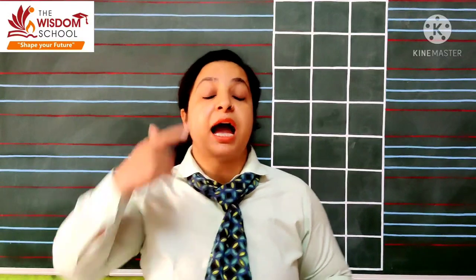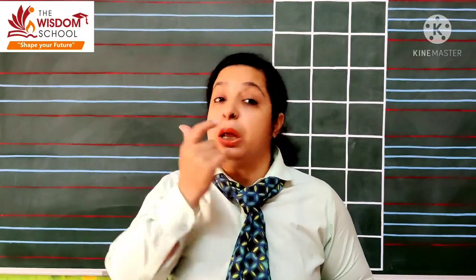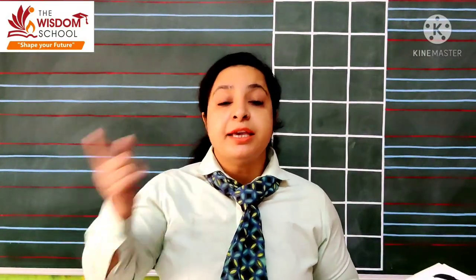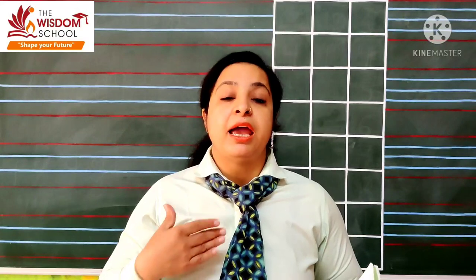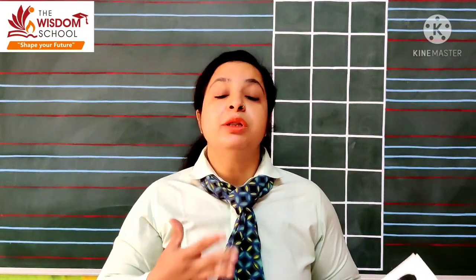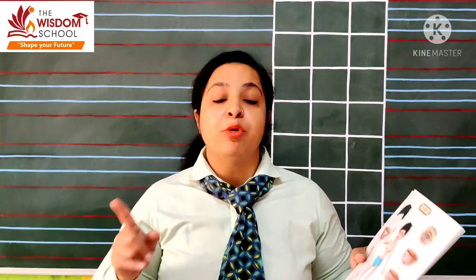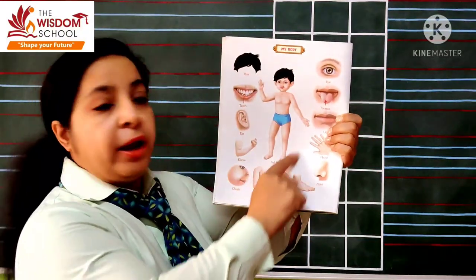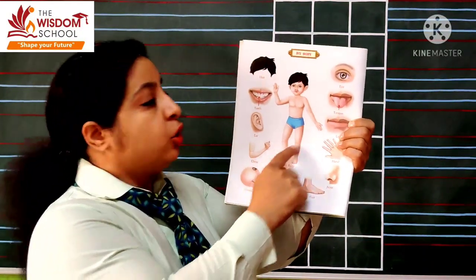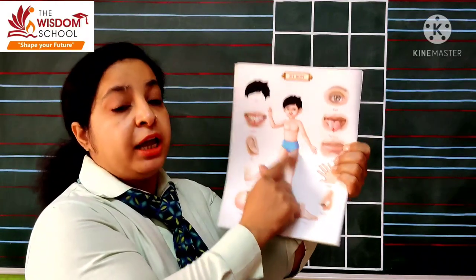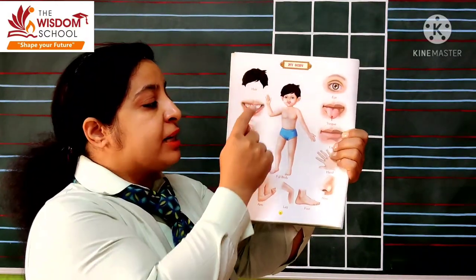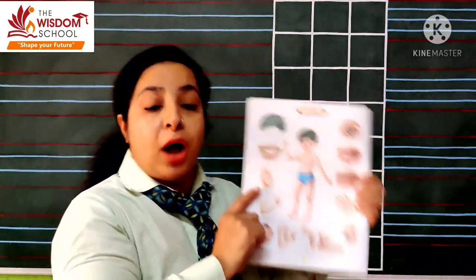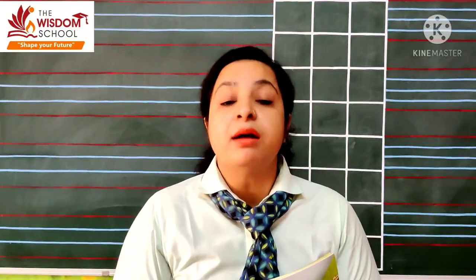Toh jo yeh parts hote hain andar — like jaise eyes hain, ears hain, nose hai, hands hain, feet hain, legs hain, arms hain — yee sab hamari body ke parts hain. Inko bolte hain parts of body. Yahan par aap ek picture dekhoge. Isme yeh jo boy wala hua hai, iske niche rakha yeh full body hai. Phir iske chhod yeh parts aapko dikha rakhi hain puri body mein. Toh aapne apne body parts ke naam learn karne hain.